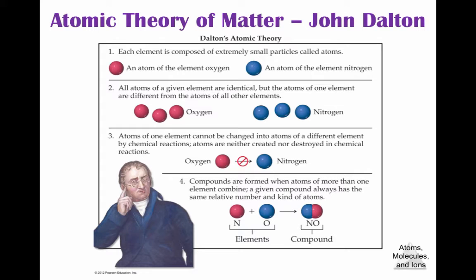We start with Dalton. Dalton proposed the atomic theory of matter. His first postulate was that each element is composed of atoms. His second postulate was that all atoms of a given element are identical, but the atoms of one element are different from other elements. So all atoms of oxygen are the same, all atoms of nitrogen are the same, but those are different from each other.